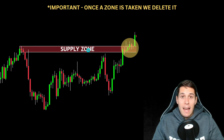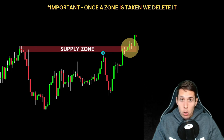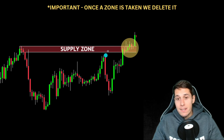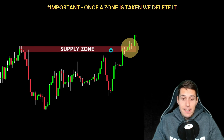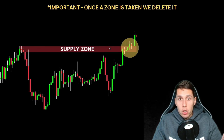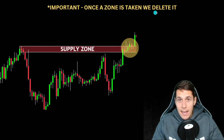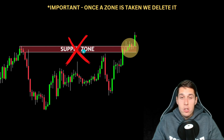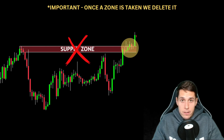Something else that's very important to understand: supply and demand zones are not like support and resistance. With support and resistance, if a resistance is taken it becomes support. That is not how supply and demand zones work. Once a zone is taken, we delete it — a supply zone does not flip to a demand zone, and vice versa.